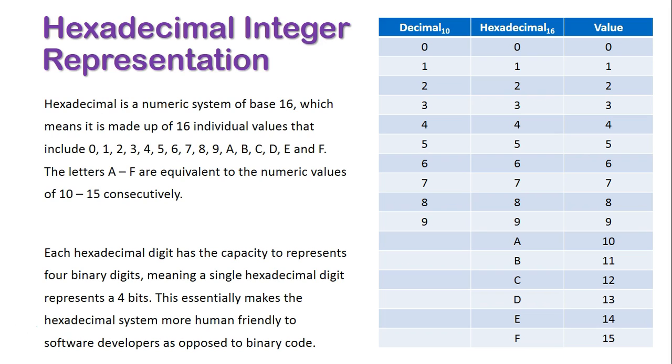Each hexadecimal digit has the capacity to represent 4 binary digits, meaning a single hexadecimal digit represents 4 bits. This essentially makes the hexadecimal system more human friendly to software developers as opposed to binary code.